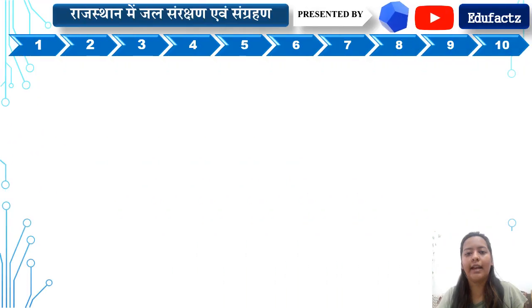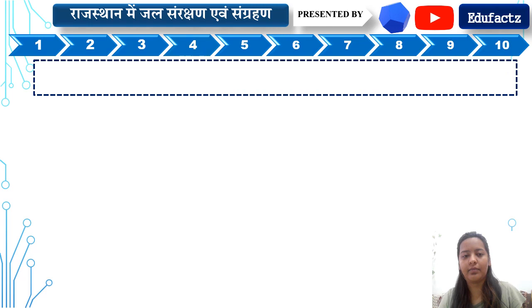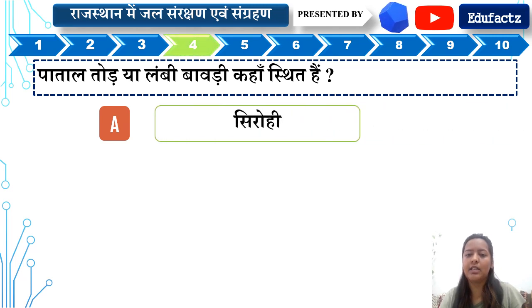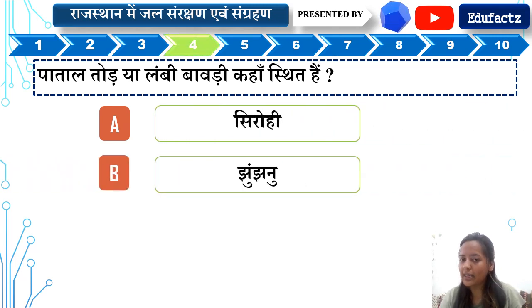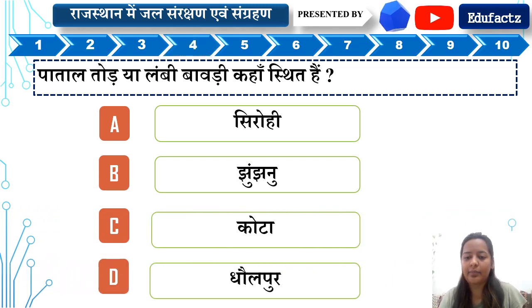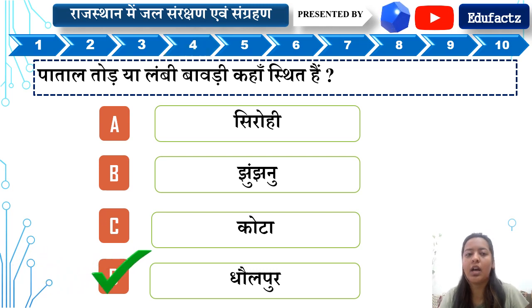Next question. The options are: A — Kota, B — D, C — Dholpur. The right answer is Option D — Dholpur. Pataal Torea Lambi Bavari Dholpur mein sthit hai.